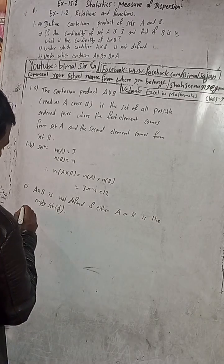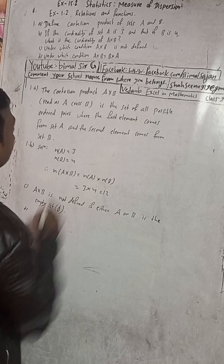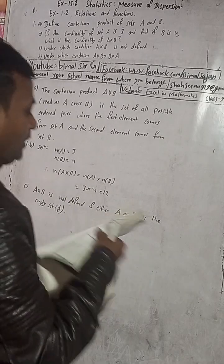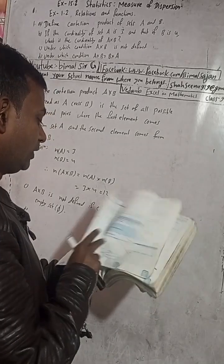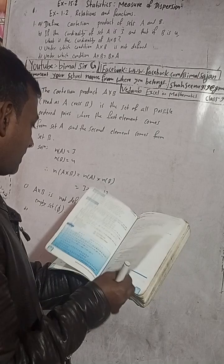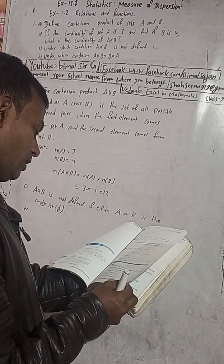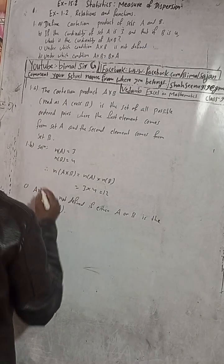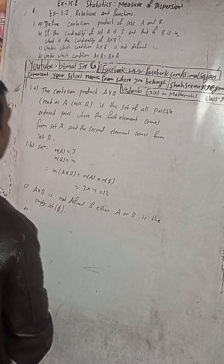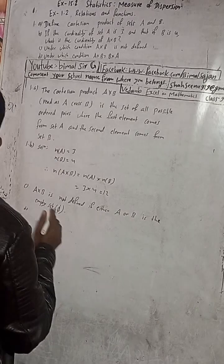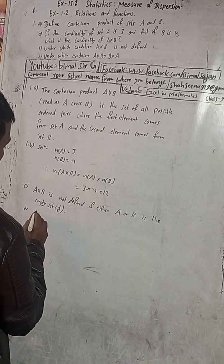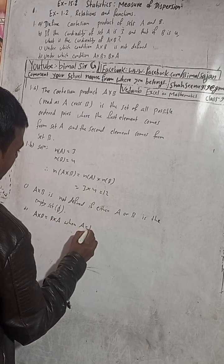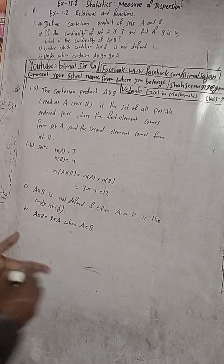Part D: Under which condition is A cross B equal to B cross A? A cross B is equal to B cross A when A is equal to B. So this is the solution of question number 1.